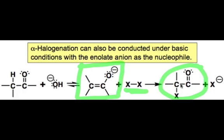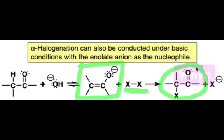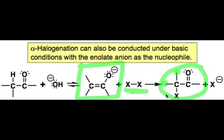The neutral alpha-halo ketone is more acidic than the original starting material. Therefore, the product of this first step is able to undergo a successive deprotonation if more protons are present on the alpha position, and undergo halogenation once or twice more.